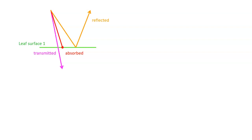In this first leaf, the light that is absorbed is converted by chloroplasts into ATP. Reflected light goes back into the environment. Transmitted light will pass through the leaf to the leaf below. How much photosynthesis the leaf below will do depends on the amount of light that it can absorb.